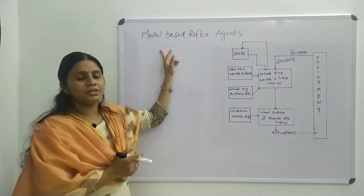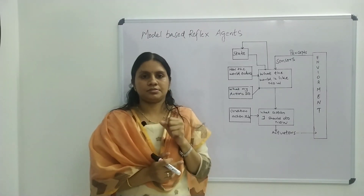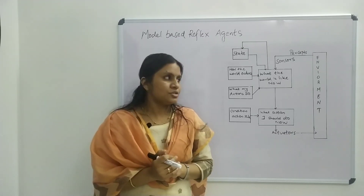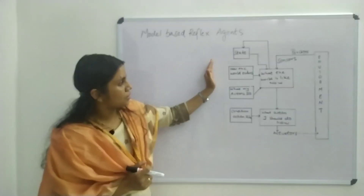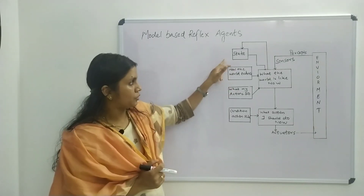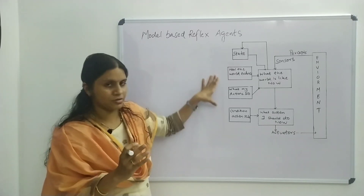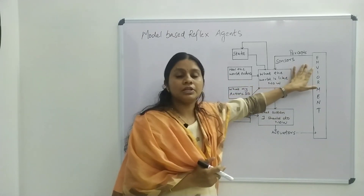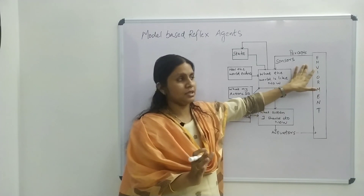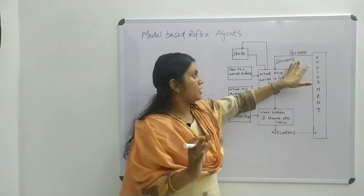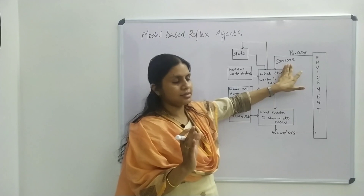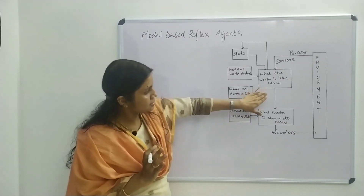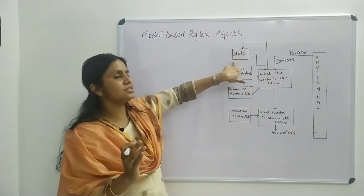A model means a knowledge base to store the past percept history. In this diagram you can see there are mainly three new blocks added to represent the past history. The agent operates in a partially observable environment, percepts from the environment using its sensors, and the current situation is considered. The current state is saved into the internal state.